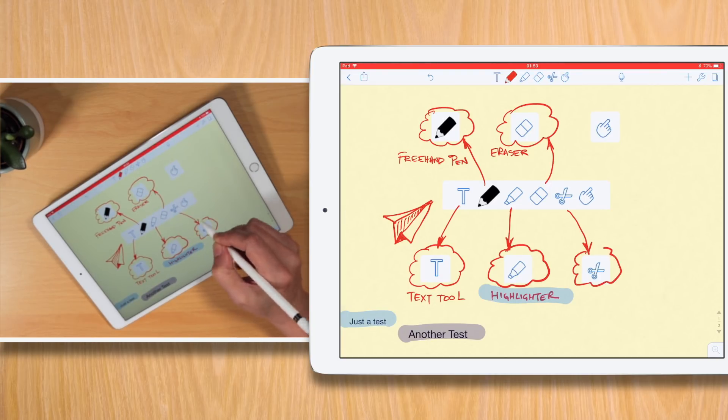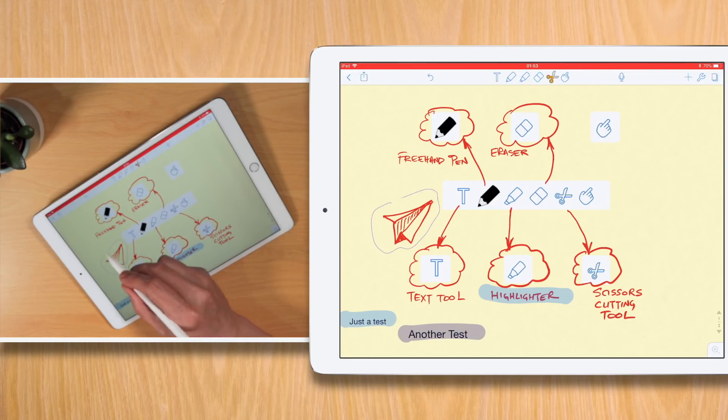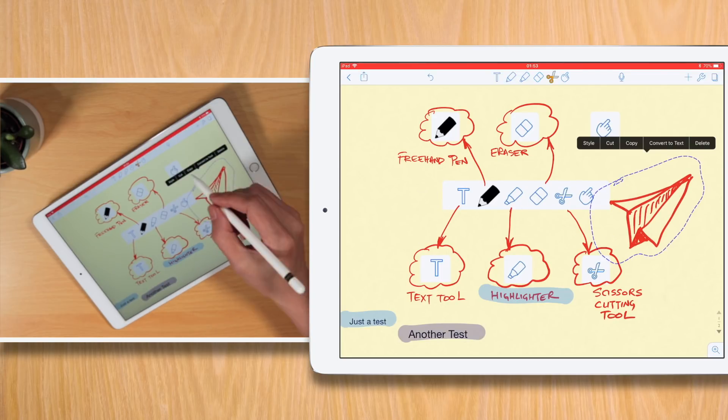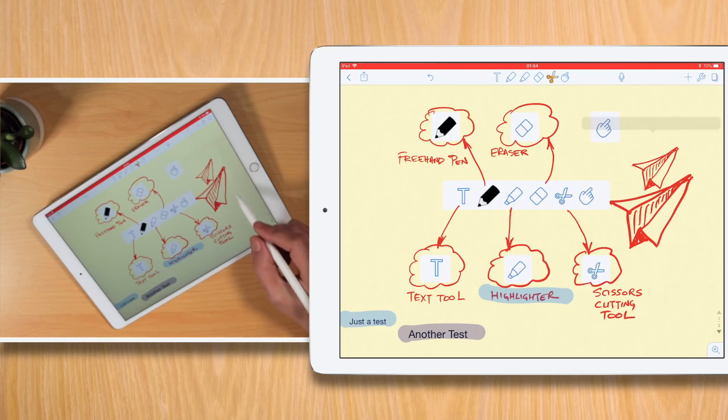The Scissors tool allows you to draw around a particular sketch or handwritten note in order to style, move around, resize, cut, copy, convert to text, or delete a particular selected section.